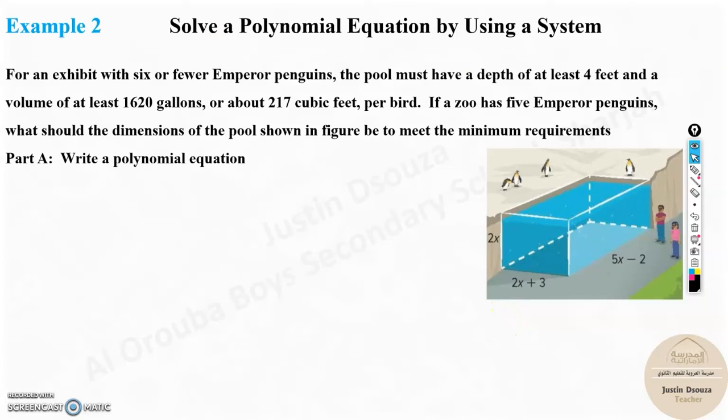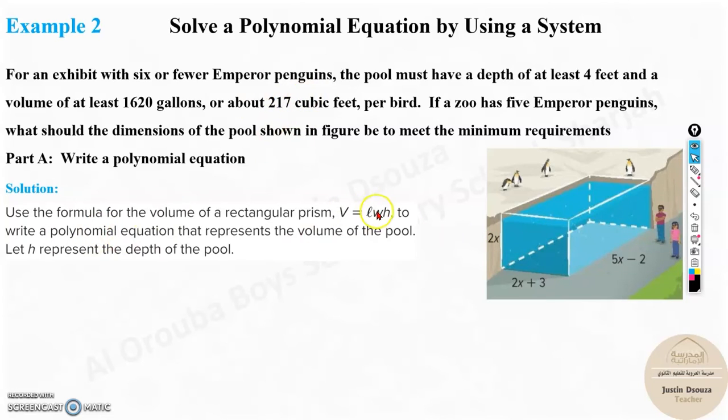Now we move on to the second example problem, which is the last example problem of this lesson. This is a small and short lesson. Here we have to solve polynomial equations. We have the problem saying, for an exhibit with six or fewer emperor penguins, the pool must have a depth of at least four feet and a volume of at least 1,620 gallons or about 217 cubic feet per bird. This is important, per bird. If there are three birds, that would mean 3 times 217. If a zoo has five emperor penguins, what should be the dimensions of the pool shown in the figure to meet the minimum requirements?